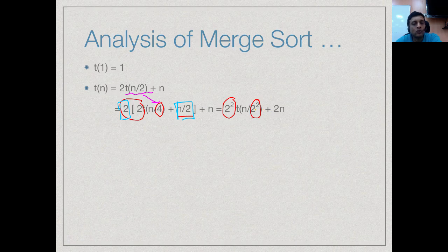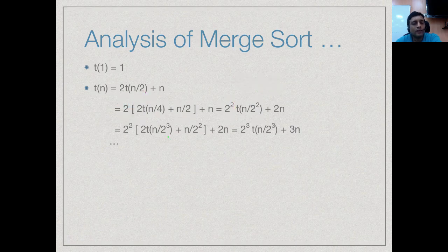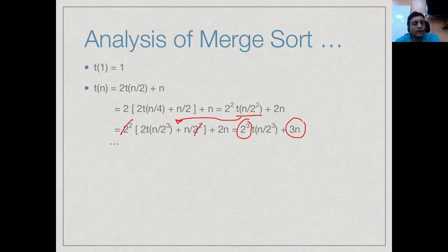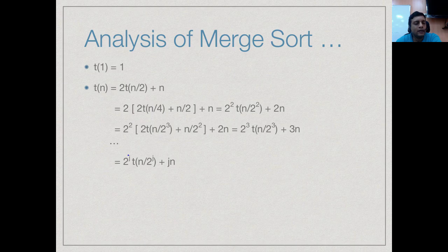Doing one more expansion step: 2²·T(n/2²) expands to 2²·[2·T(n/2³) + n/2²], giving 2³·T(n/2³) + 3n. The pattern is clear — after j steps we have 2^j·T(n/2^j) + j·n. We reach the base case when n/2^j = 1, i.e., when 2^j = n, meaning j = log₂(n).